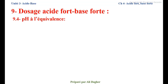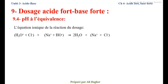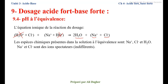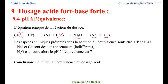pH à l'équivalence : comment peut-on expliquer la valeur du pH à l'équivalence ? Les espèces chimiques présentes dans la solution à l'équivalence sont Na⁺, Cl⁻ et H₂O, car H₃O⁺ et OH⁻ réagissent totalement à l'équivalence. Na⁺ et Cl⁻ sont des ions spectateurs, indifférents du point de vue acido-basique. Il reste H₂O qui est neutre, donc le pH à l'équivalence est égal à 7. Conclusion : le milieu à l'équivalence du dosage acide fort-base forte est neutre.